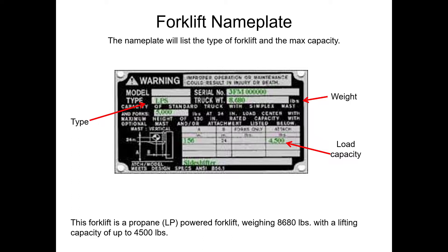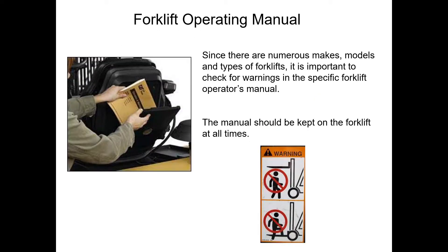Every forklift is supposed to have a nameplate giving information on how much it can safely lift, the vehicle weight, and its type. The forklift operating manual should always be provided on the forklift itself — usually in a little plastic case on the left side — for the operator's convenience.